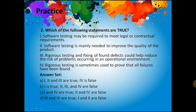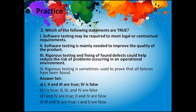Second question: Which of the following statements are true? There will be several correct statements. Statement A: software testing may be required to meet legal or contractual requirements — true. Statement B: software testing is mainly needed to improve the quality of the product — yes, software testing improves quality. Statement C: rigorous testing and fixing of found defects could help reduce the risk of problems occurring in an operational environment — true. Statement D: rigorous testing is sometimes used to prove that all failures have been found — it is not possible to prove that all failures have been found, so this is not true.